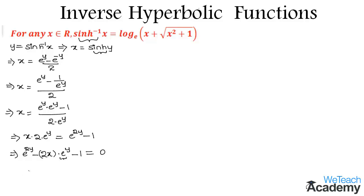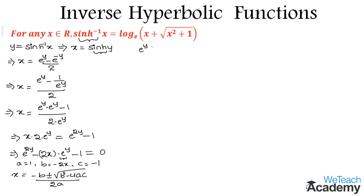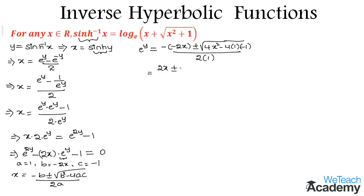Comparing with the standard quadratic equation, we get a equal to 1, b equal to minus 2x, and c equal to minus 1. We know the quadratic formula: x equal to minus b plus or minus under root of b squared minus 4ac, divided by 2a. Using this formula, e power y equals minus of minus 2x, plus or minus under root of 4x squared minus 4 into 1 into minus 1, divided by 2 into 1.